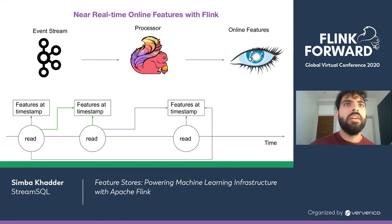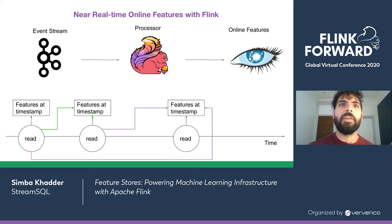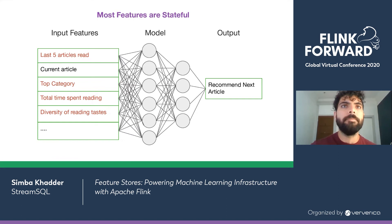The first one is actually the easiest: near real-time online features. This is something Flink is super good for. Flink is built from the ground up for stream processing. If we have a stream of input data, we have a Flink job that can turn that into an aggregation — the feature values for each user for each model.